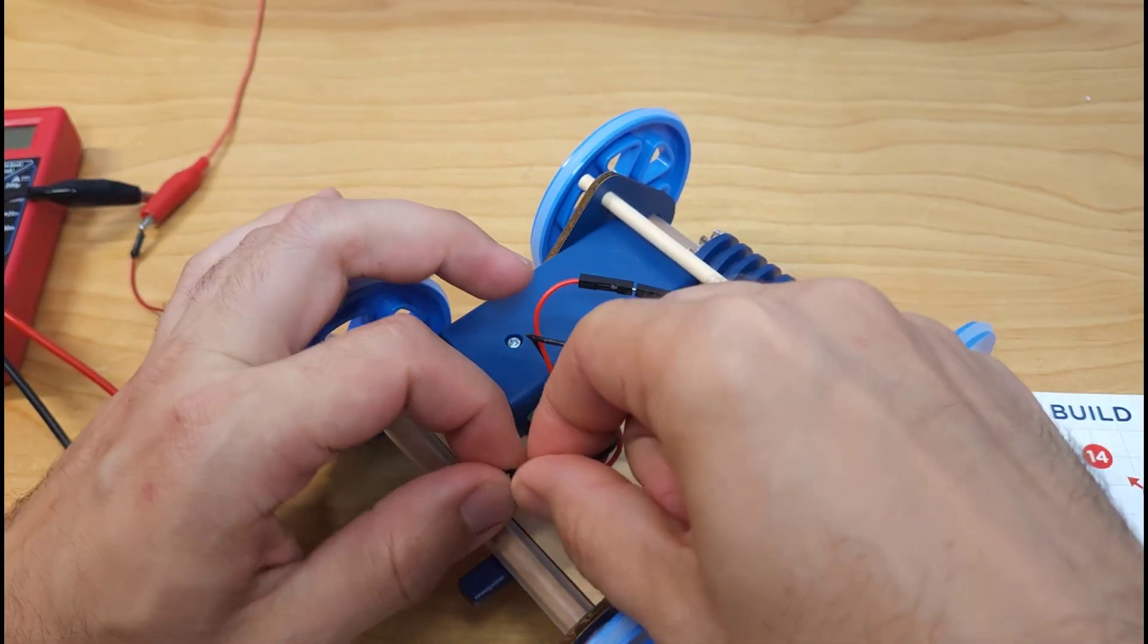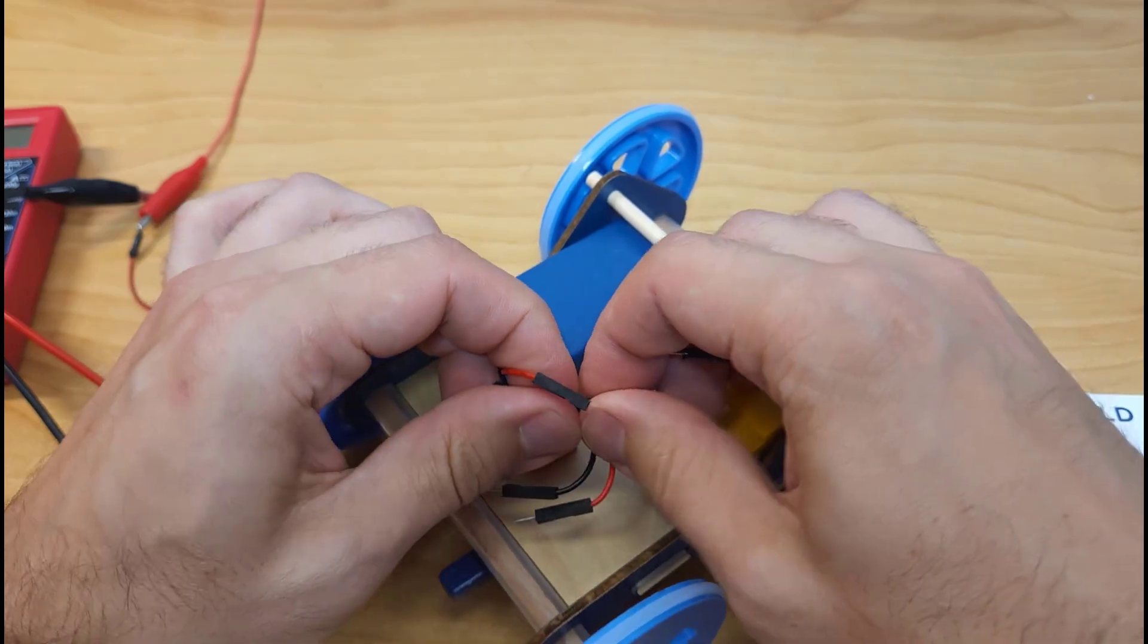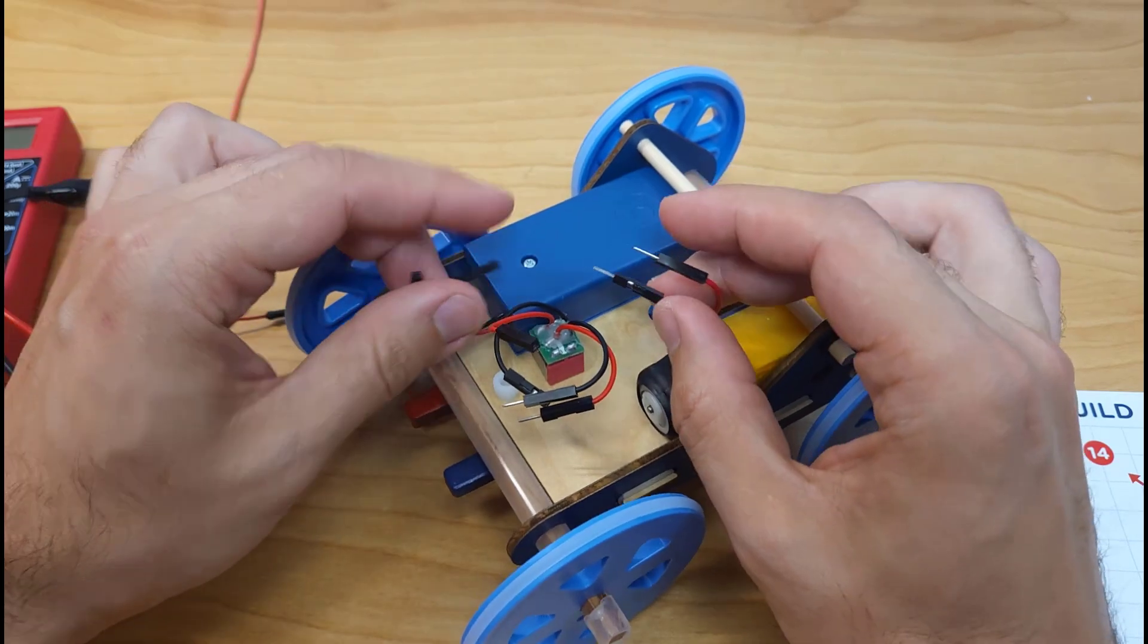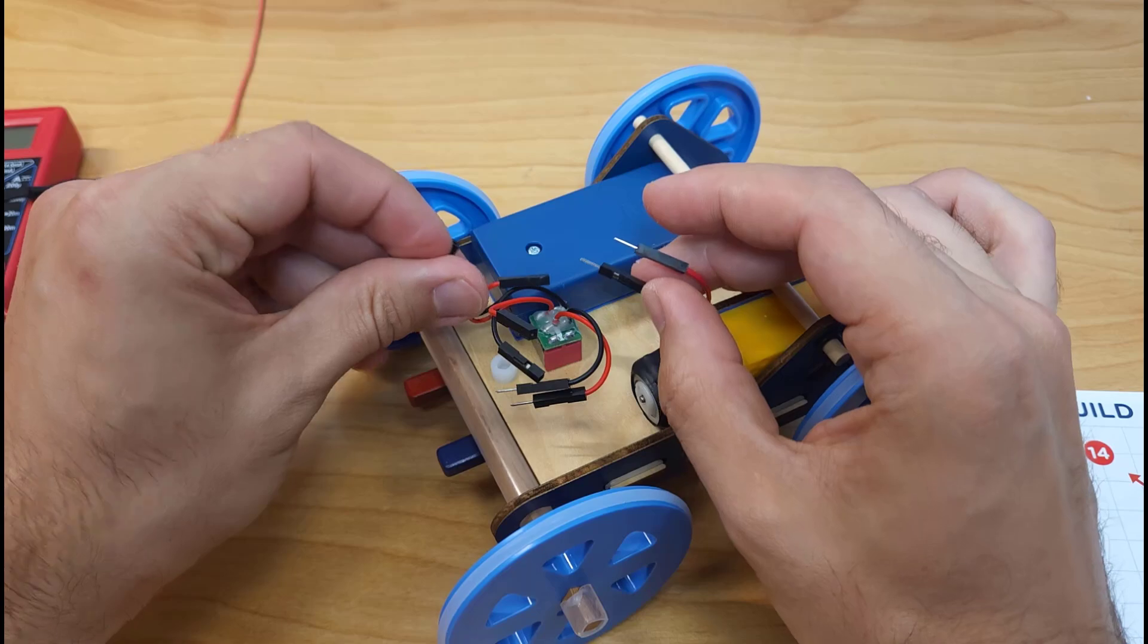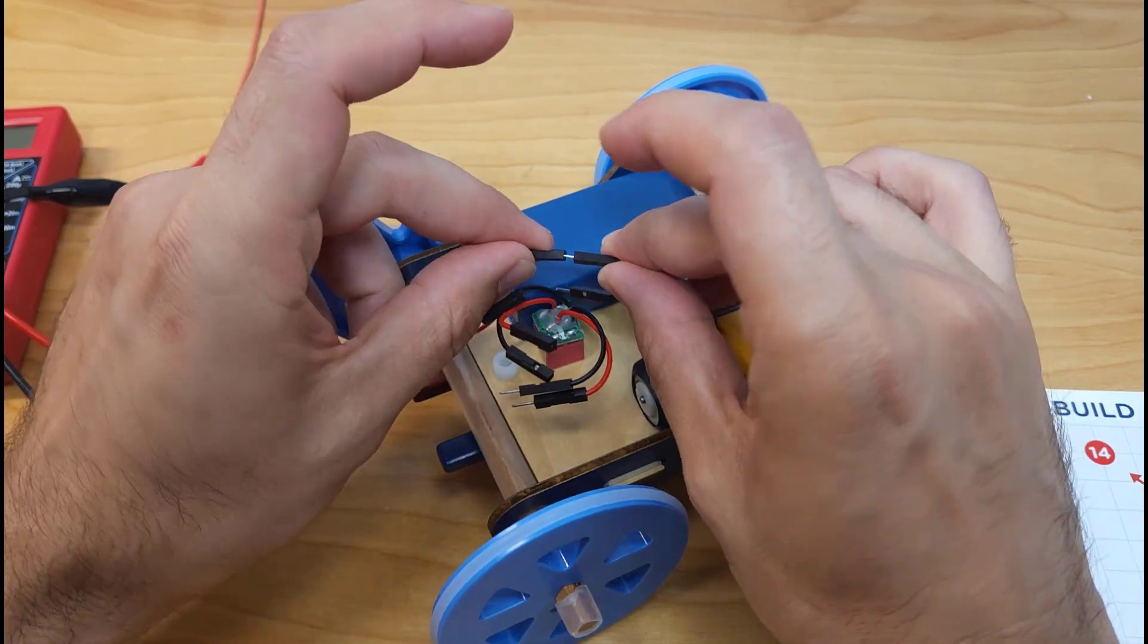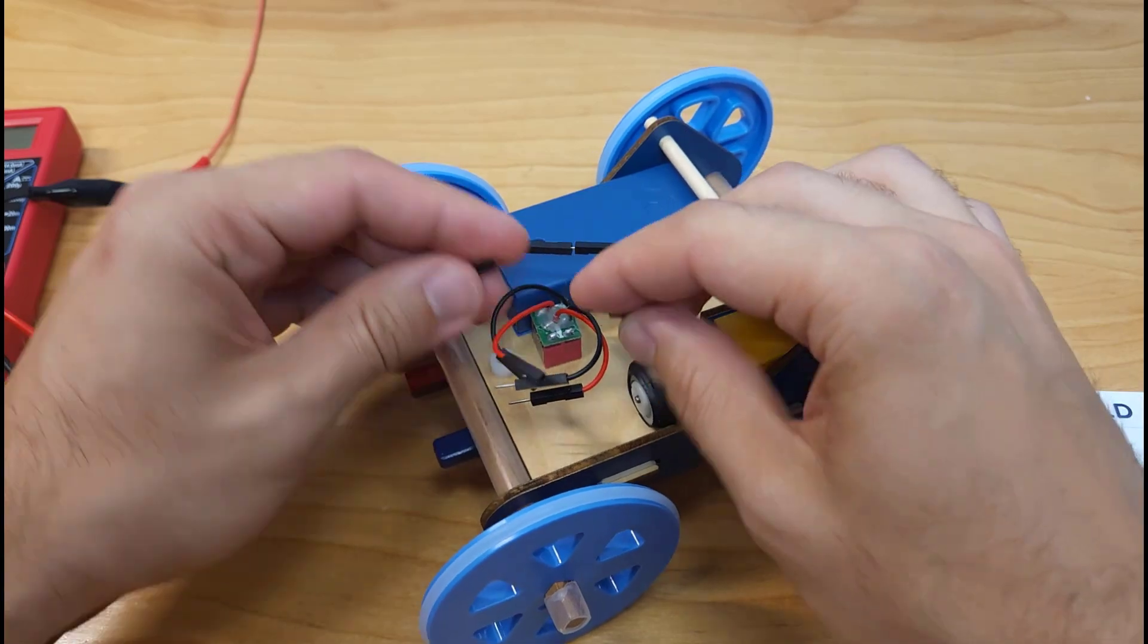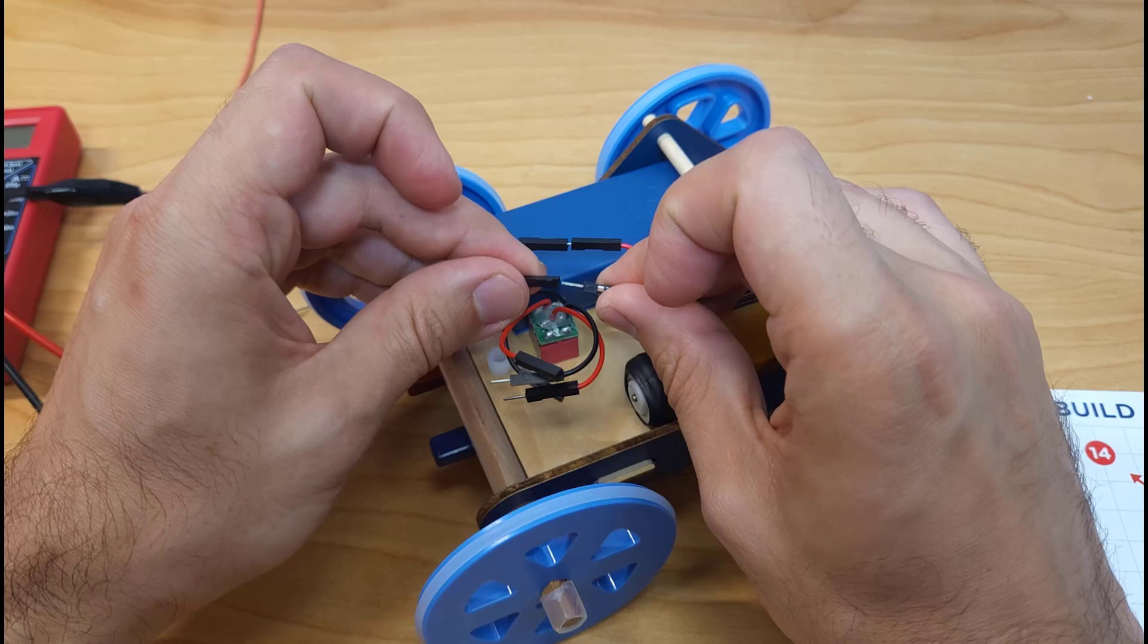But one thing you can always do if you have a project with some intermediate electronics between a battery and a motor, just to confirm that there's nothing wrong with your battery and your motor, is skip whatever else is in the middle and plug the battery directly into the motor. So I can do that here by connecting the battery wires directly to the motor, again bypassing the switch, and you see when I do that, it's going to turn on right away.